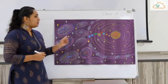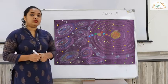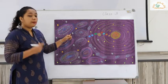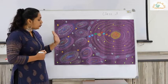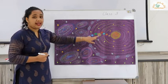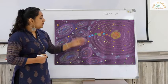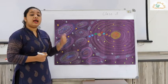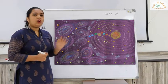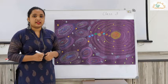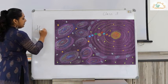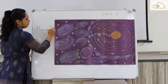So children, what can you see in this picture? We can see stars — big, small and huge. We can see some planets, the sun, the orbits, comets, asteroids and meteors. Now what are all these objects? These are called heavenly objects.